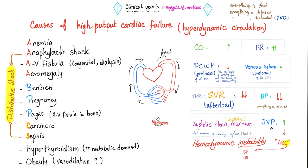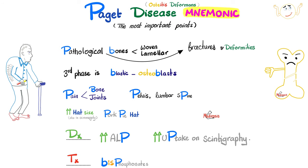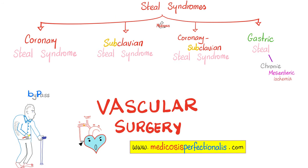Quick summary: Paget's disease features pathological bones, fractures, and deformities; the third (blastic/sclerotic) phase dominates clinically; bone pain and joint pain occur at the pelvis and lumbar spine; head size increases; diagnosis relies on isolated elevated alkaline phosphatase and increased uptake on nuclear bone scan; treatment includes lifestyle modification, calcium/phosphate/PTH/vitamin D optimization, and bisphosphonates. AV fistulas increase risk of steal syndromes including coronary, subclavian, and gastric steal.